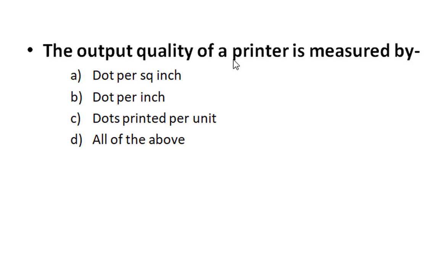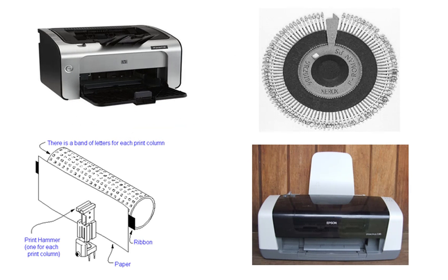Another question: The output quality of a printer is measured by? The options are: Dot per square inch, Dot per inch, Dot printed per unit, and All of the above. The right answer is Dot per inch (DPI). When we check any printer's quality, we measure it in dots per inch.